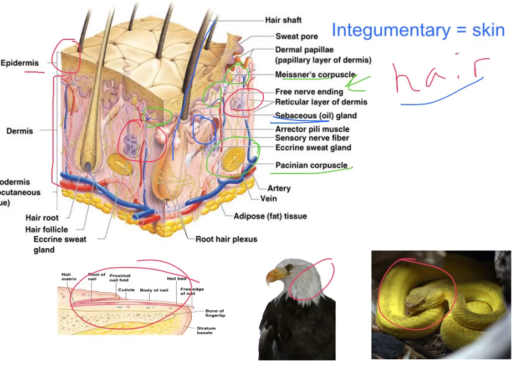We also have a number of blood vessels located in the lower layers of the skin, including arteries and veins down in those lower levels. Those will be important when we talk about temperature control, as well as the hair shafts that are embedded in the skin as one of the derivatives.